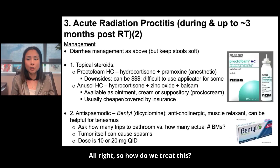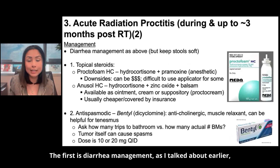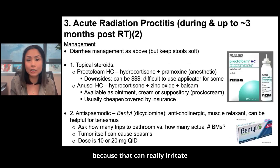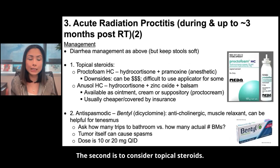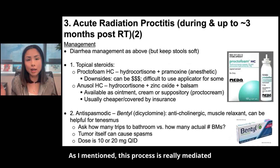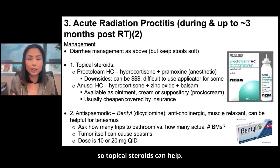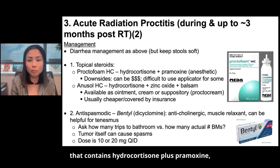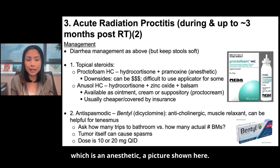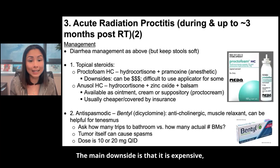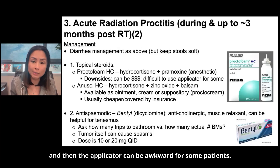How do we treat acute radiation proctitis? The first is diarrhea management as discussed earlier, but it's important to make sure stools don't get too firm because that can really irritate and cause worsening inflammation. The second is to consider topical steroids — since this process is mediated by local inflammation, topical steroids can help. One thing we prescribe is Proctofoam, which contains hydrocortisone plus pramoxine, which is an anesthetic. It can be helpful, but the main downside is that it is expensive and the applicator can be awkward for some patients.